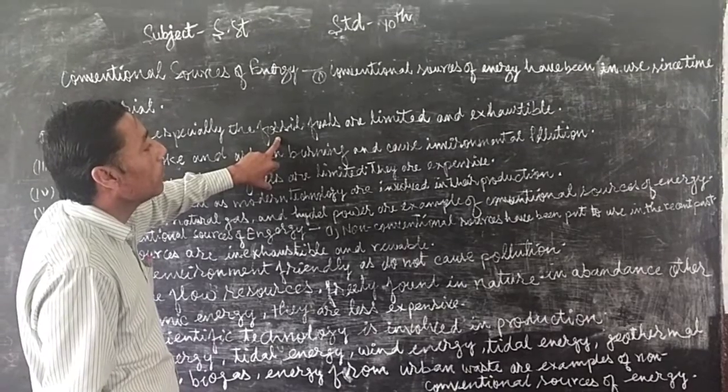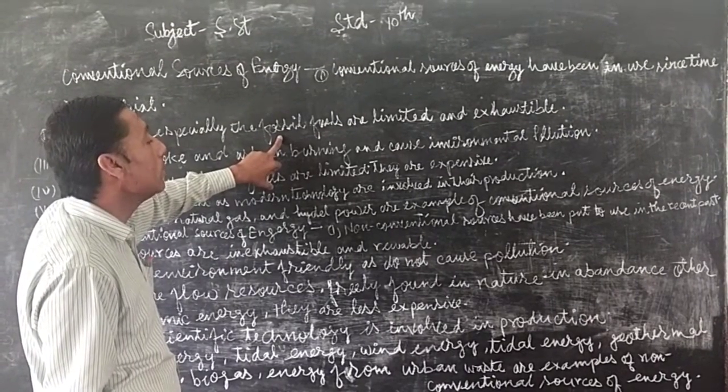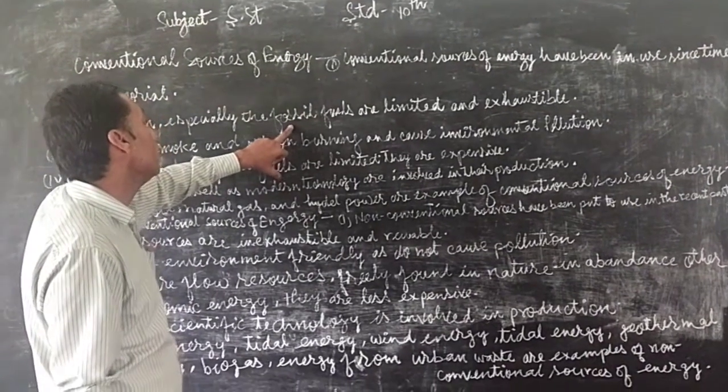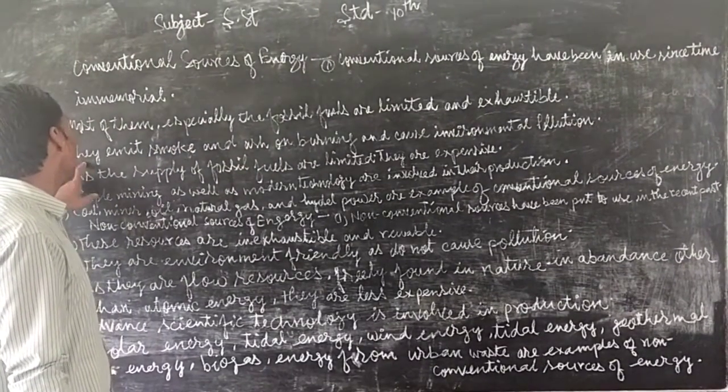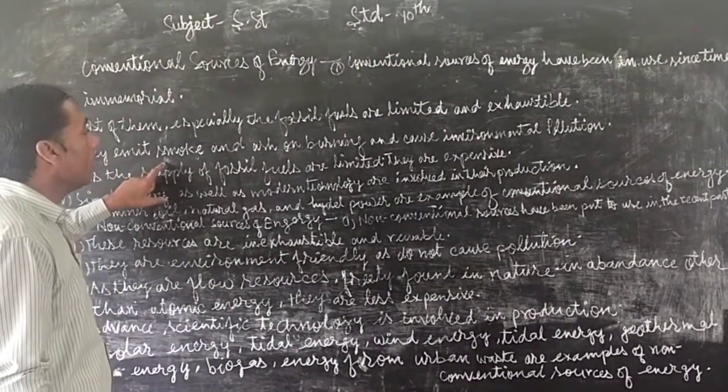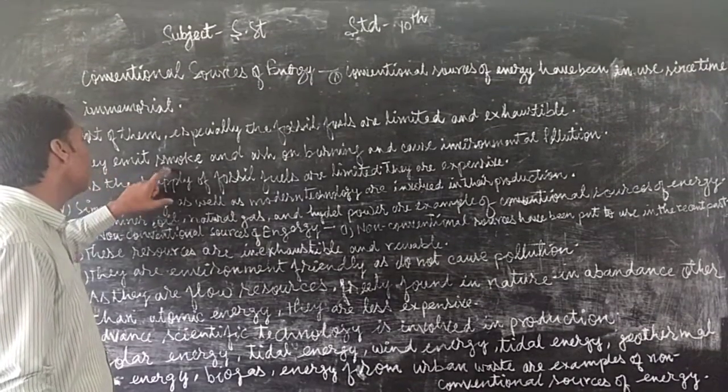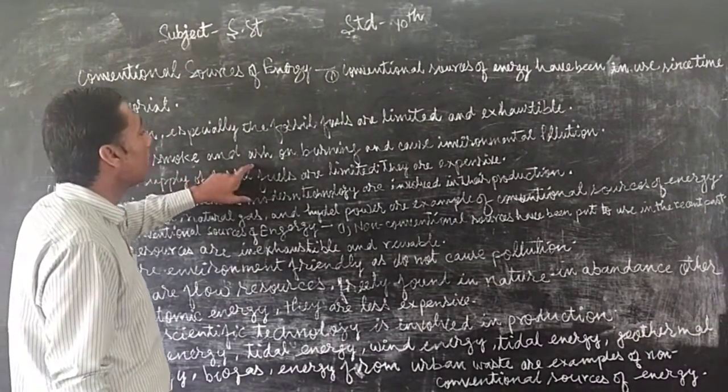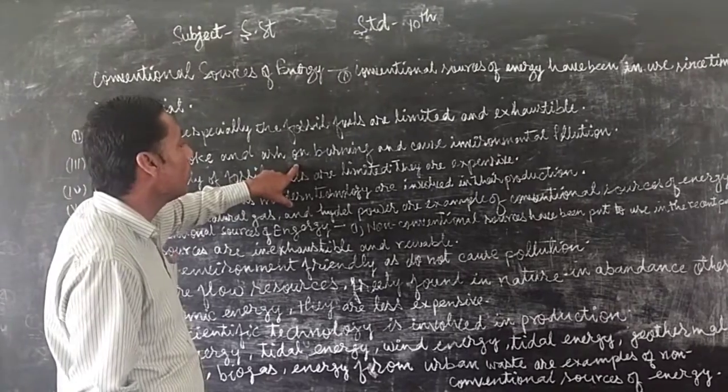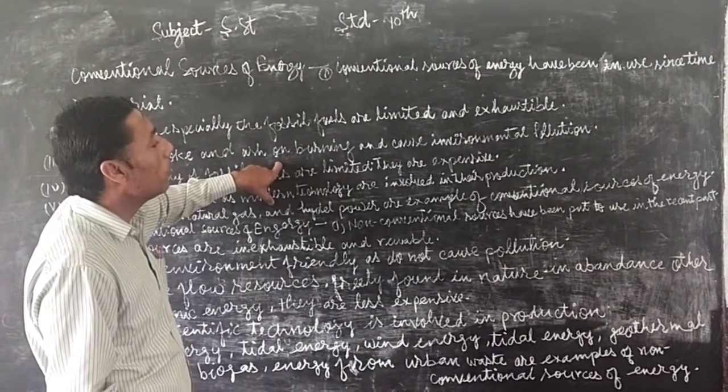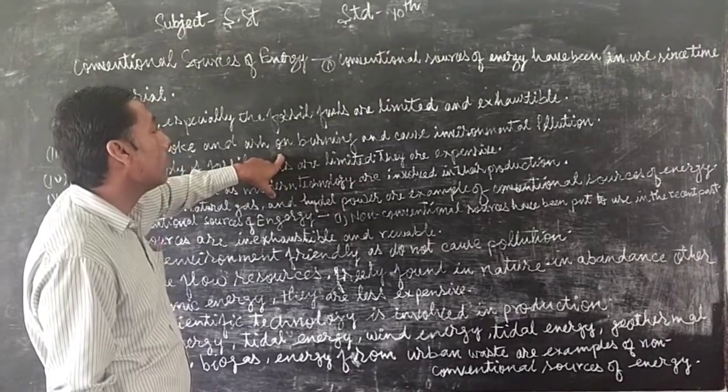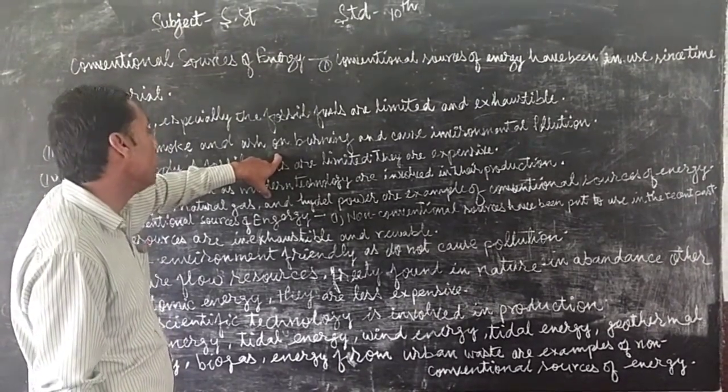These are exhaustible. These are the most important source of energy. These are exhaustible sources of energy and produce smoke and ash. Smoke and ash are produced on the burning of fuels. They are pollutants and cause environmental pollution.